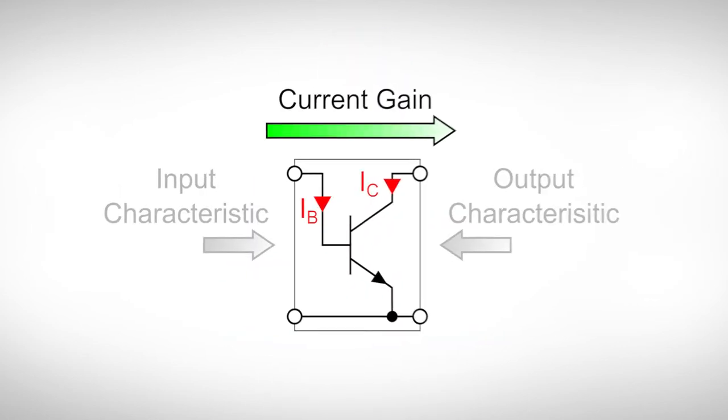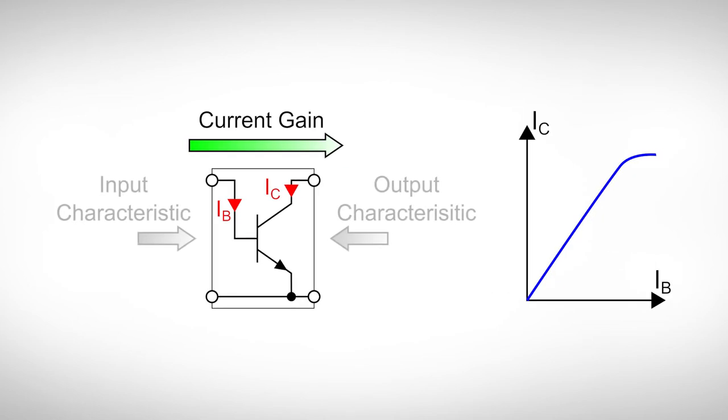The current gain is possibly the greatest perk of a bipolar transistor. The current gain is the ratio between collector current IC and base current IB. The higher the current gain, the higher IC will be for a given IB. If we plot IC as a function of IB, we see a near constant slope at the beginning. This slope basically represents the current gain. A steep slope means a high current gain.